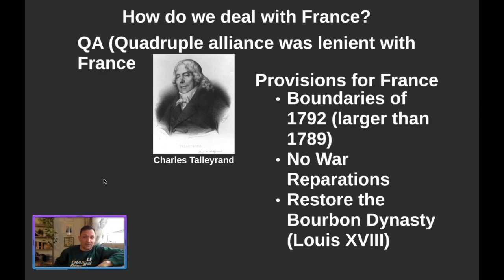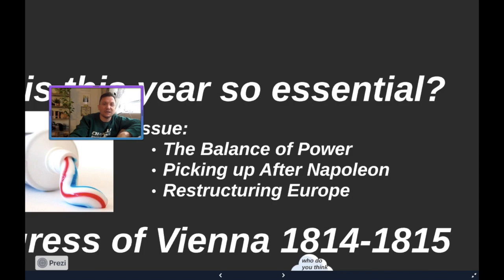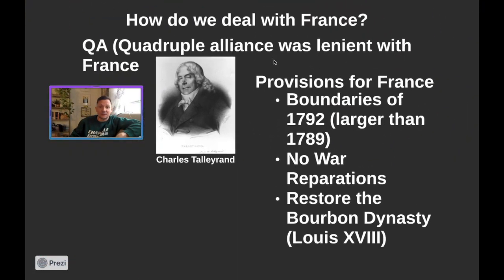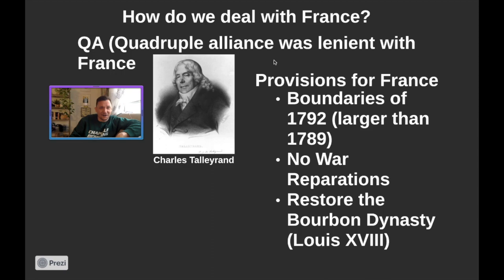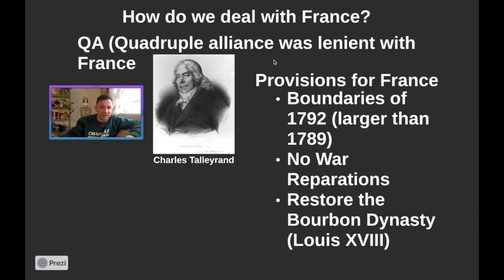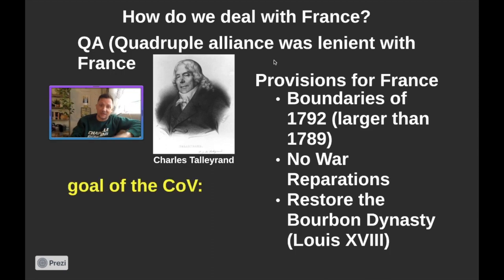The biggest thing Talleyrand gave them was: we must restore the monarchy. So they literally bring the Bourbon dynasty back, and they actually bring in Louis XVI's brother and call him Louis XVIII. Some of you might ask: where did the 17th go? Well, Louis XVII was Louis XVI's son — he was only alive for a little while, didn't make it through the entirety of the revolution, and ended up dying. So Louis XVI's brother becomes Louis XVIII.